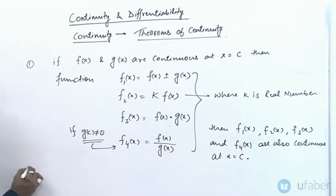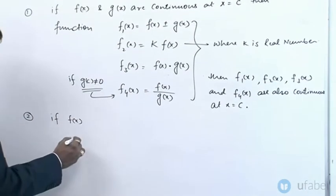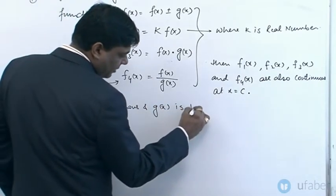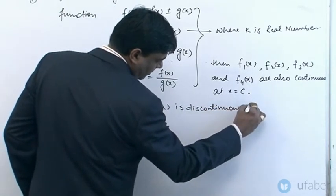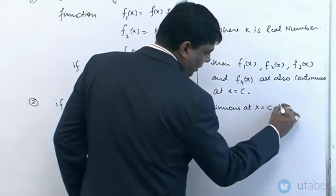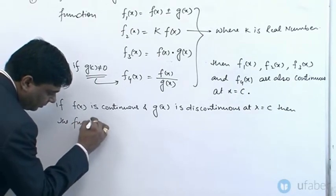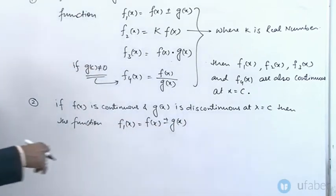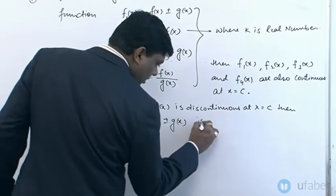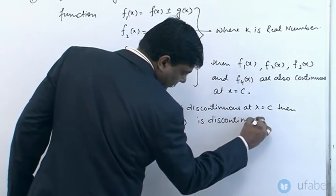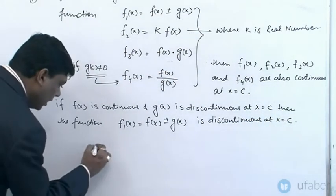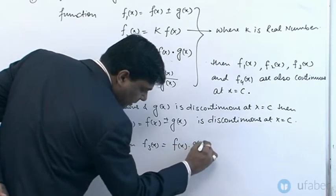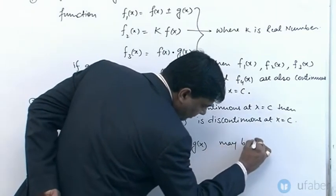Second: if f(x) is continuous and g(x) is discontinuous at x equal to c, then the function f1(x), which is f(x) plus or minus g(x), is discontinuous at x equal to c. The function f3(x), which is f(x) multiplied with g(x), may be continuous.